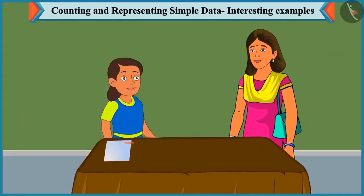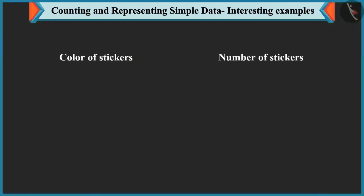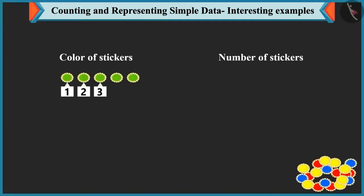Mummy shows Bubbly a box of stickers she brought from the Bazaar with different colors. Bubbly must group the different colors and count them — the same way she counted vegetables and shapes. Bubbly starts counting: 1, 2, 3, 4 and 5 green stickers, so she writes 5 against green. Then she counts 1, 2, 3, 4, 5, 6 and 7 red stickers.